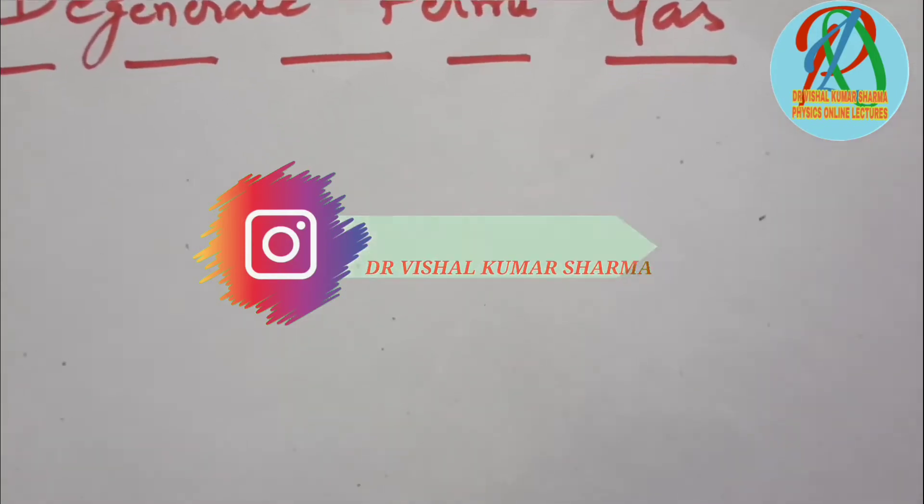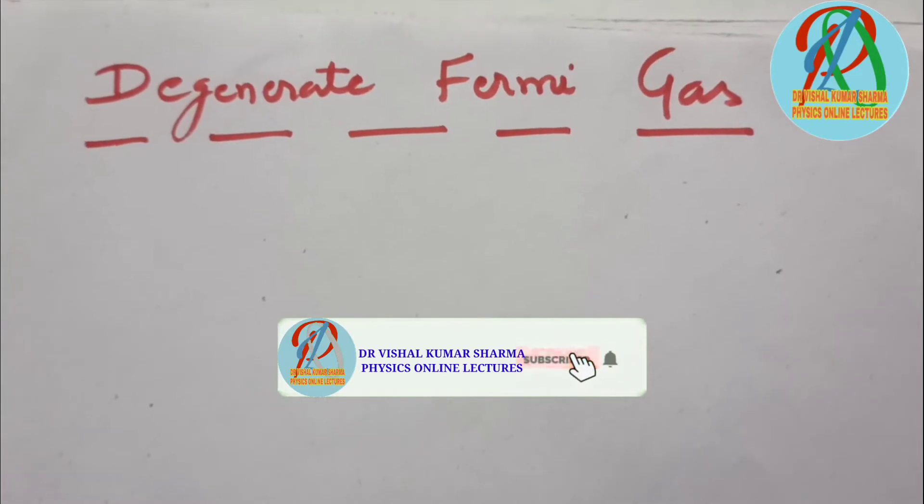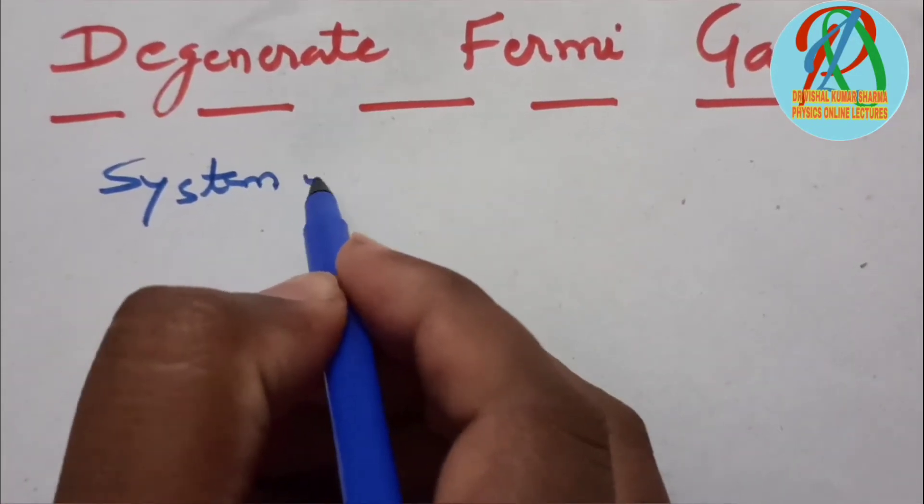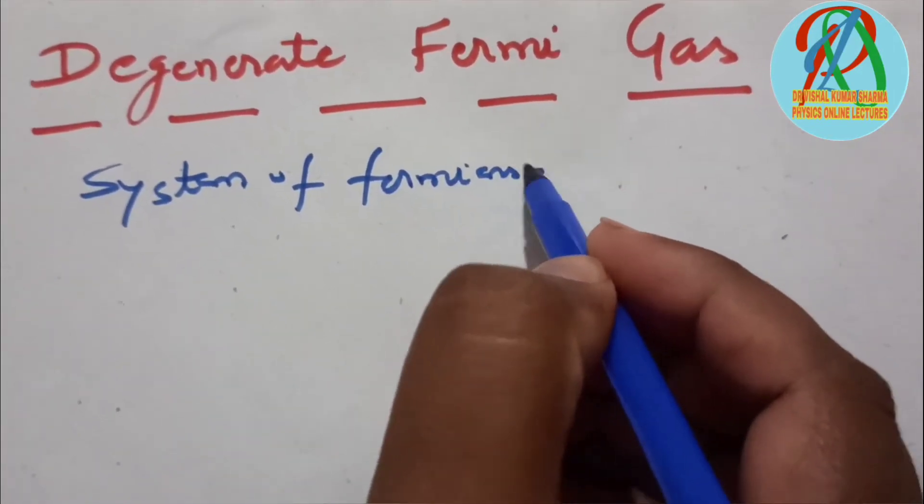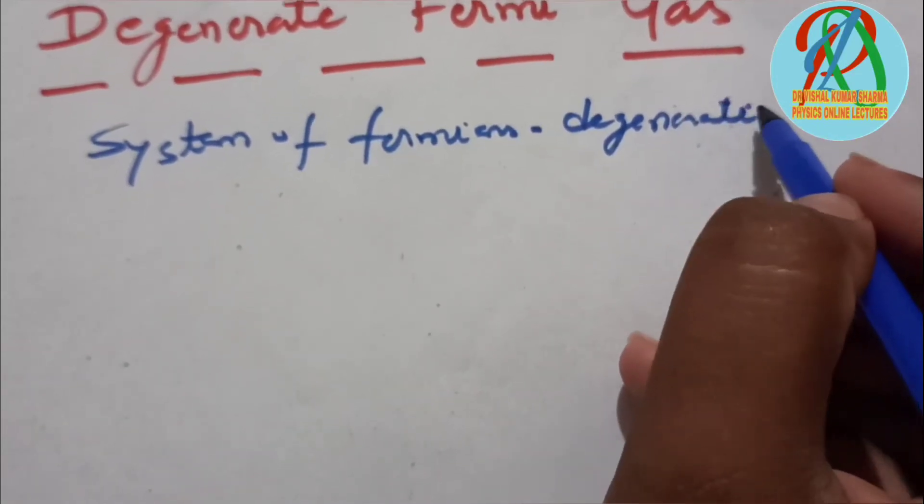Hello, welcome once again. I am going to discuss the degenerate Fermi gas. When we consider a system of fermions, we consider them as degenerate. I will tell you why it is said to be degenerate.